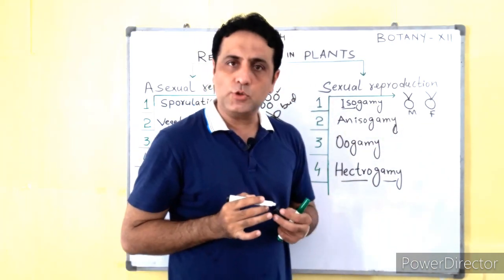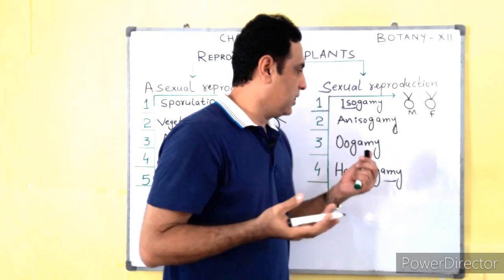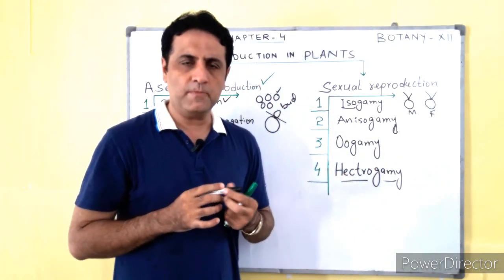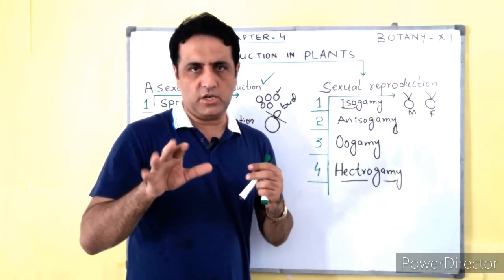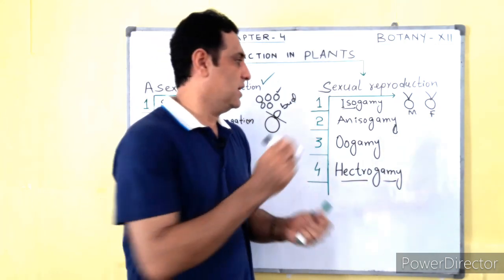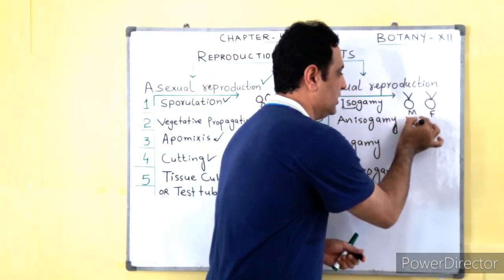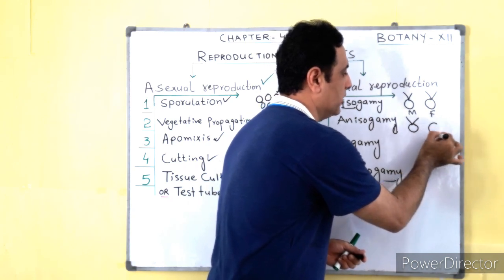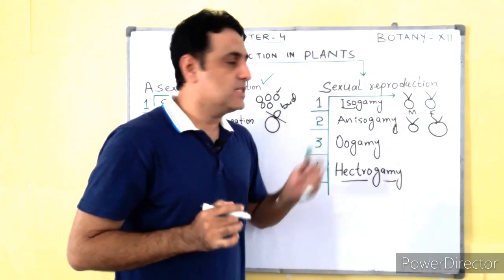The other type of sexual reproduction is anisogamy — anisogamy means different isogamy. In anisogamy, male and female gametes are to some extent different from each other. The male gamete is smaller and has flagella, while the female gamete is larger and also has flagella. This is called anisogamy.